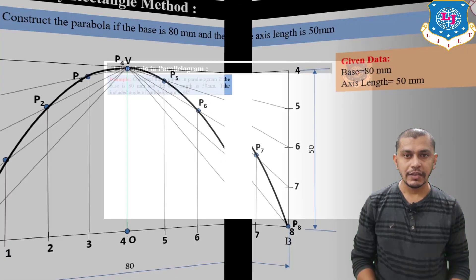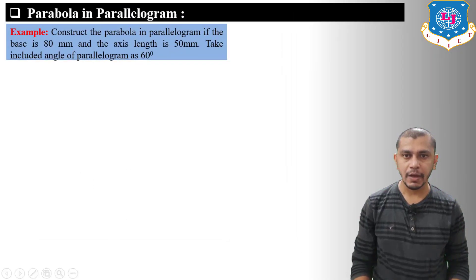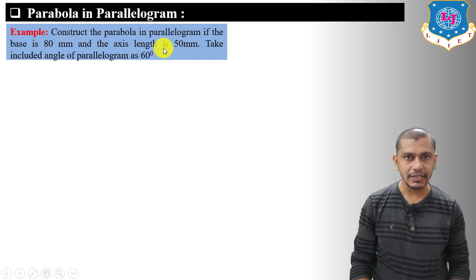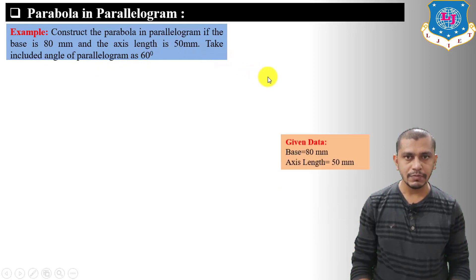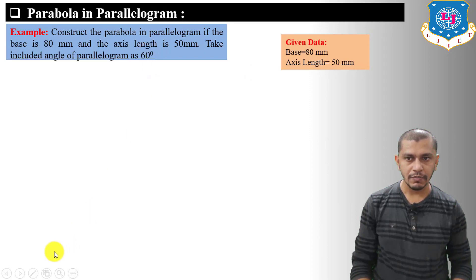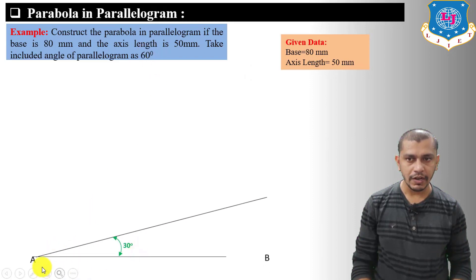Now let's move on to the next method: parabola in parallelogram. Construct the parabola in a parallelogram if base is 80 mm, axis length is 50 mm, and included angle of parallelogram is 60 degrees. First, draw the base AB at an angle of 30 degrees from the horizontal baseline, having length equal to 80 mm.